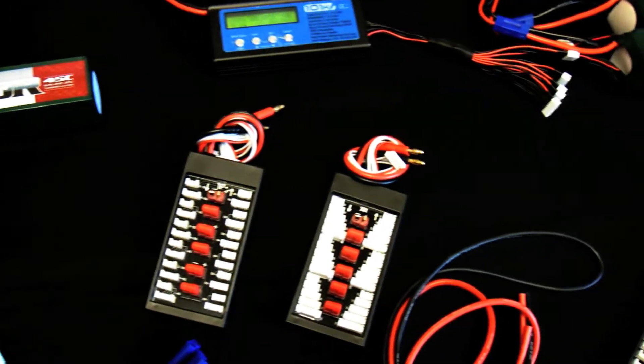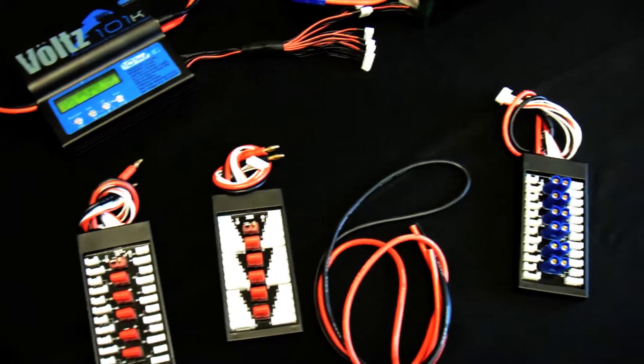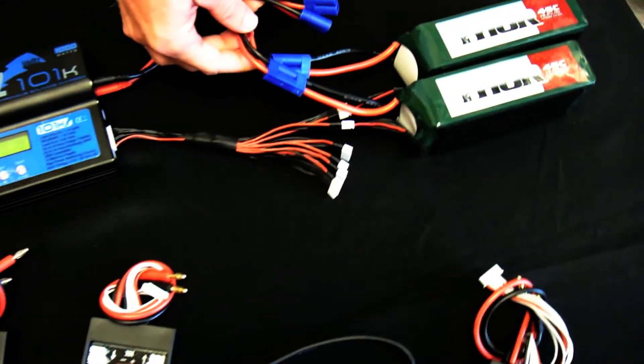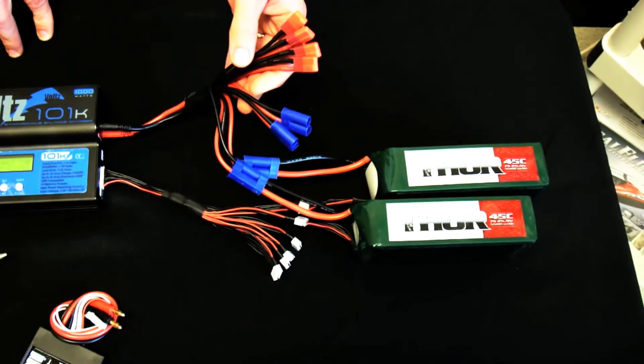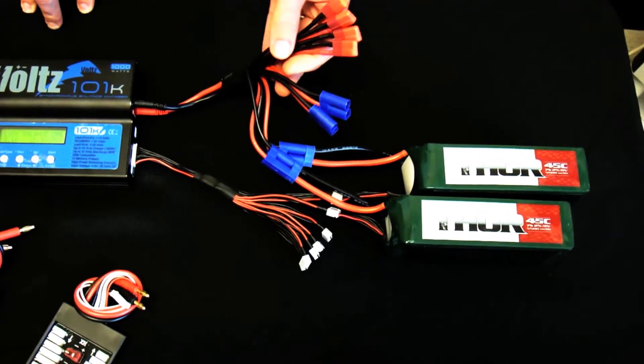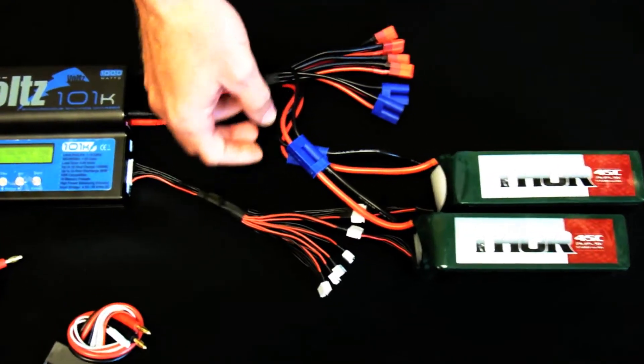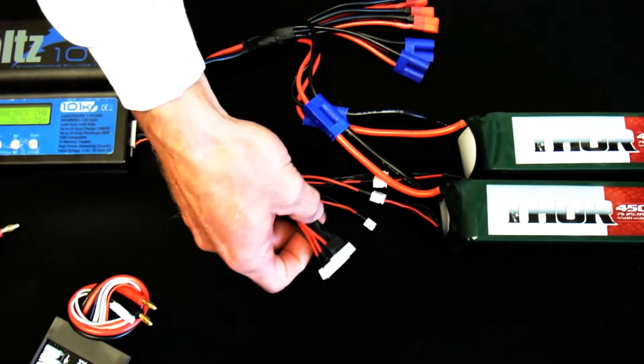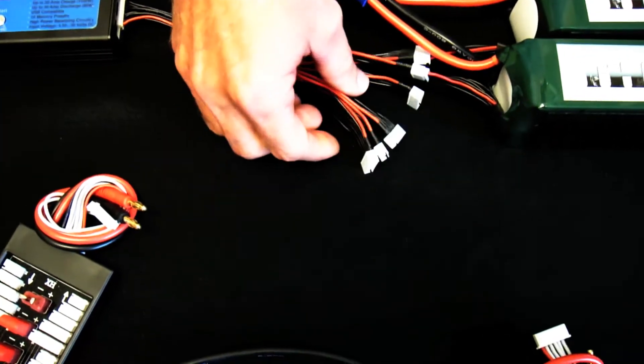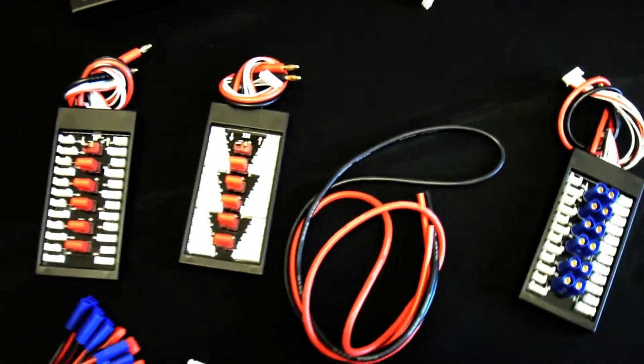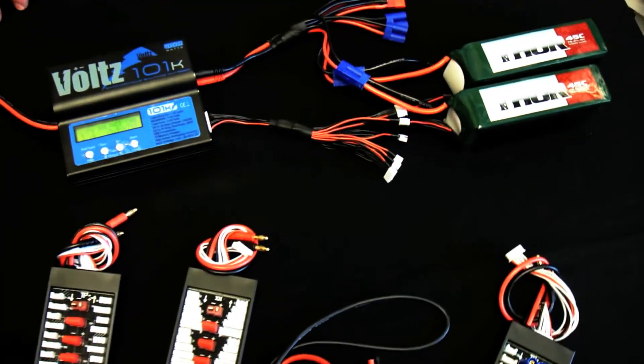We've also got a new line of parallel charging accessories. Parallel cables with four EC5's and four Dean style plugs which can charge up to eight packs at once. We have plugged into it two seven cell Thor packs. We have seven cell parallel balancing cables available as well. We have six, five, and three cell parallel cables also available on the website.